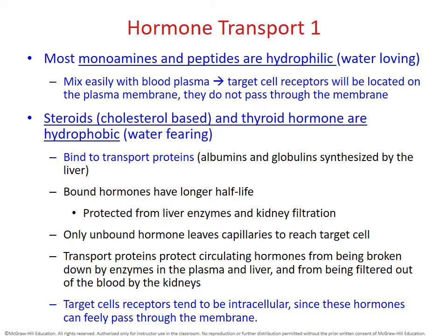All cells have a cell membrane composed of a phospholipid bilayer with hydrophilic and hydrophobic qualities. Monoamine and peptide hormones are hydrophilic — water loving — meaning they can easily be released into the blood and interact with the mostly-water blood plasma. When they reach their target cells, the receptors are located on top of the plasma membrane, so these hormones do not have to enter inside the cell.